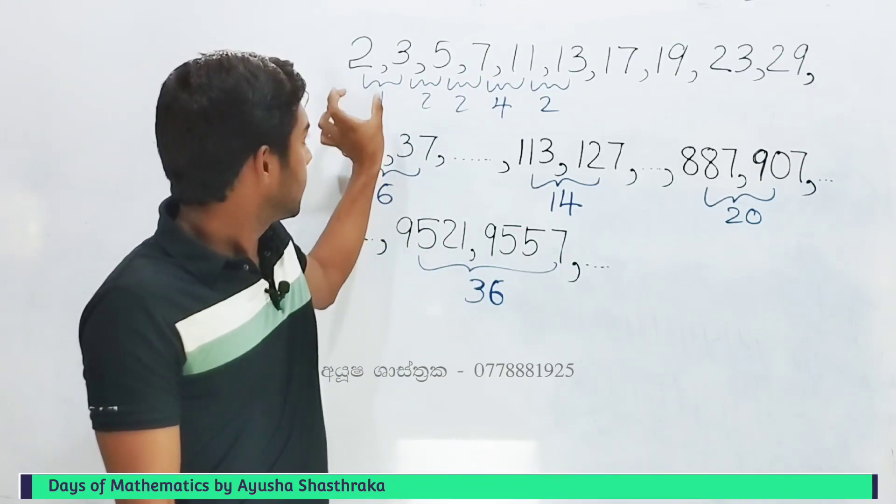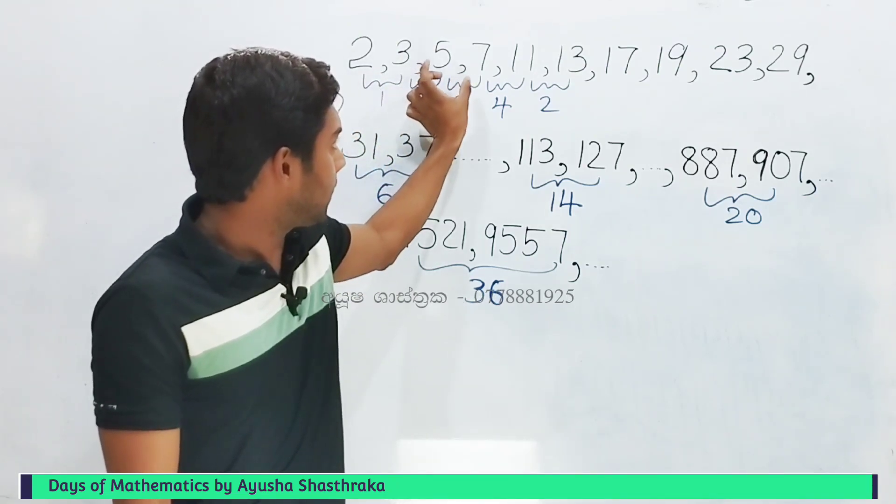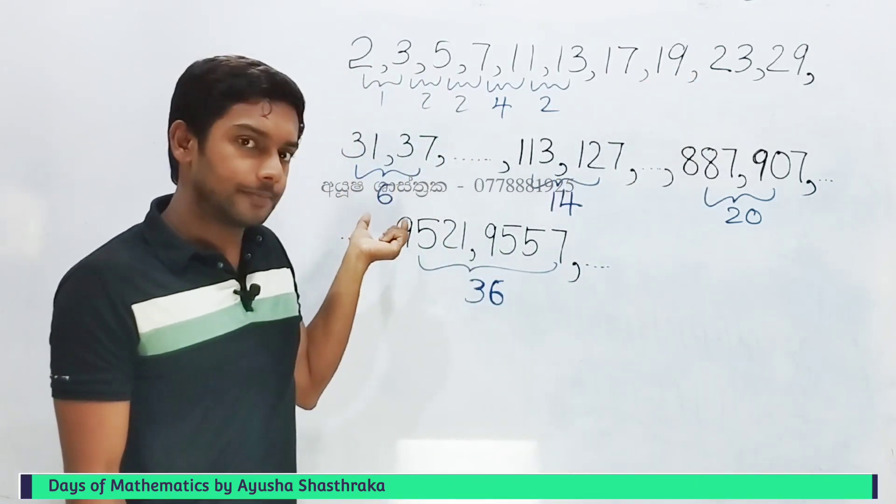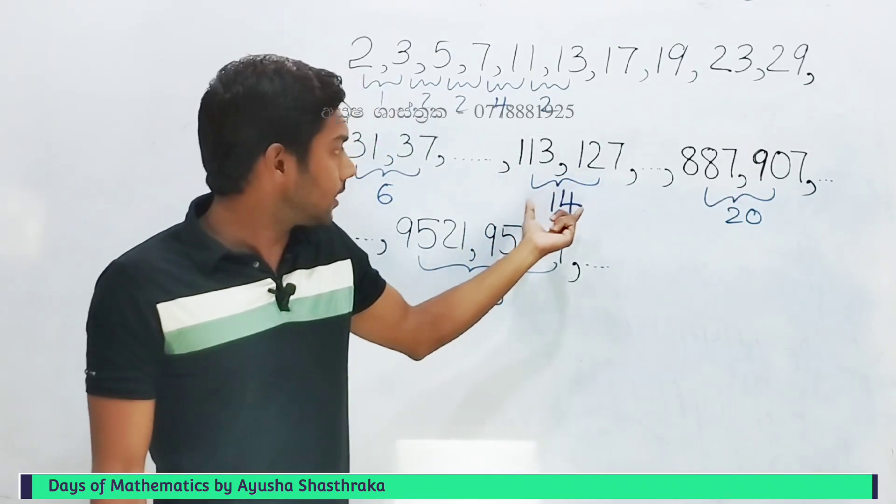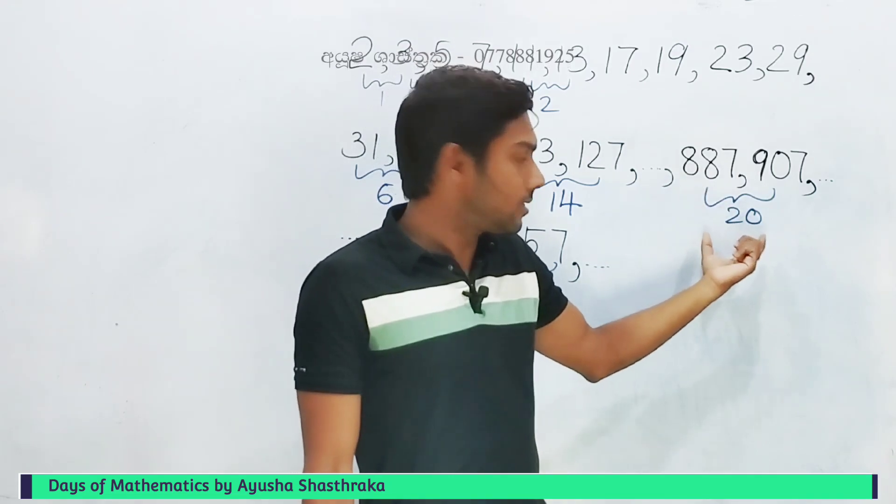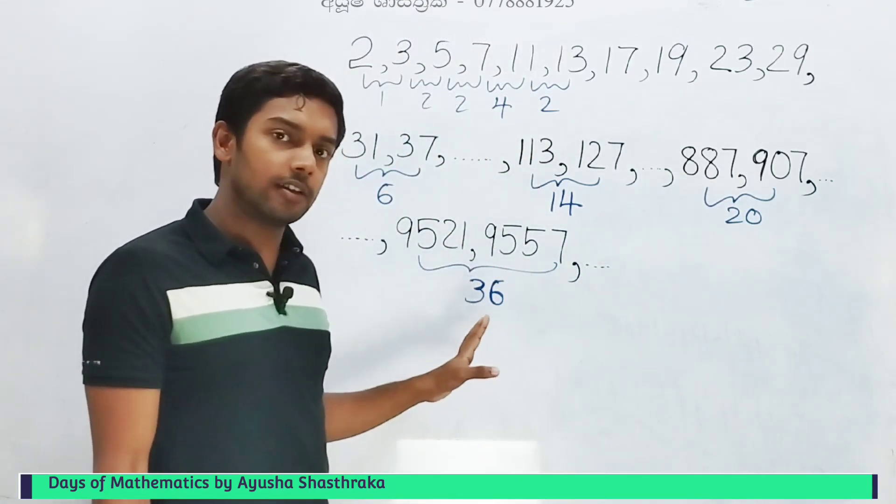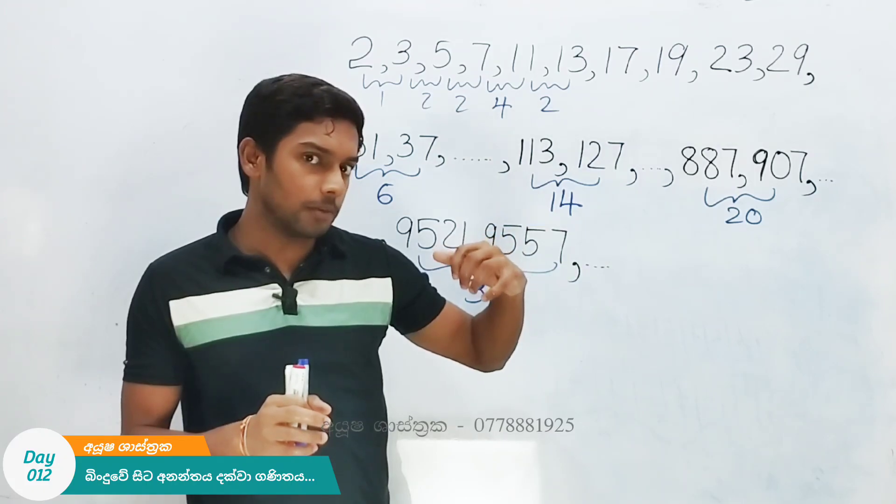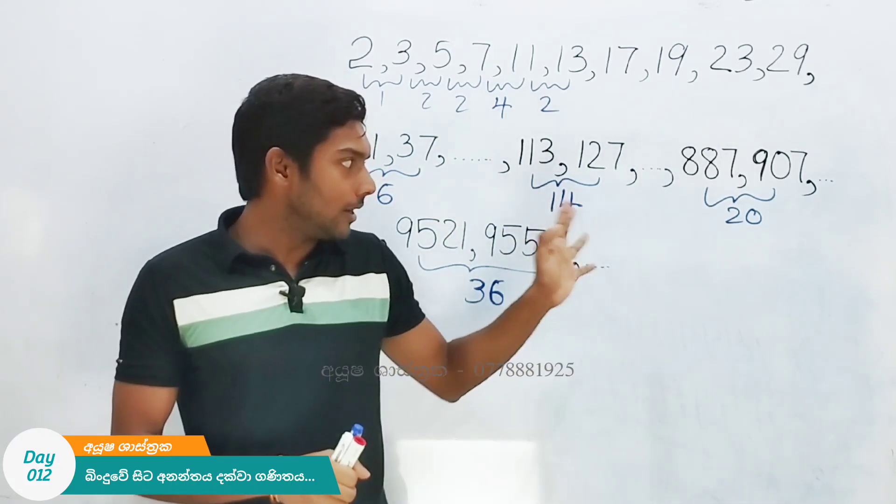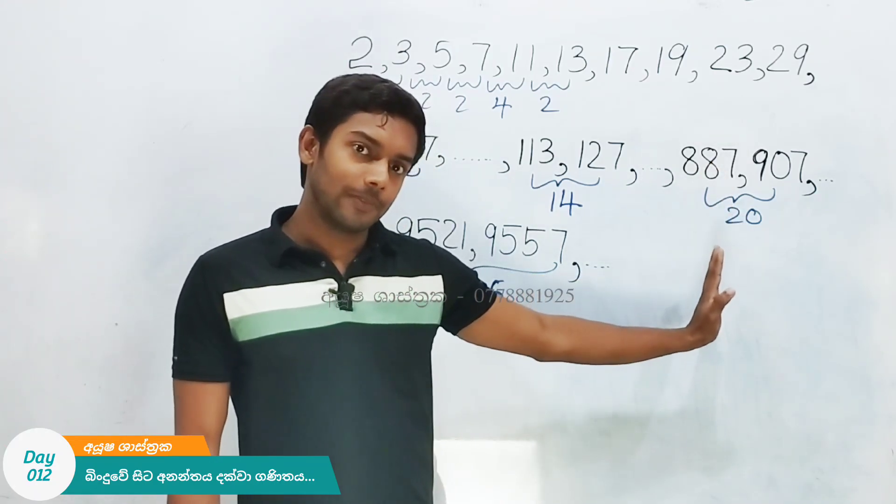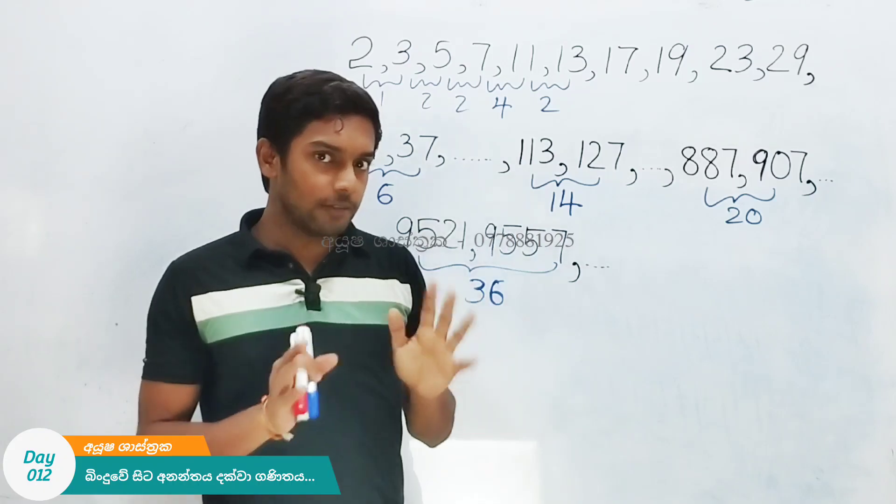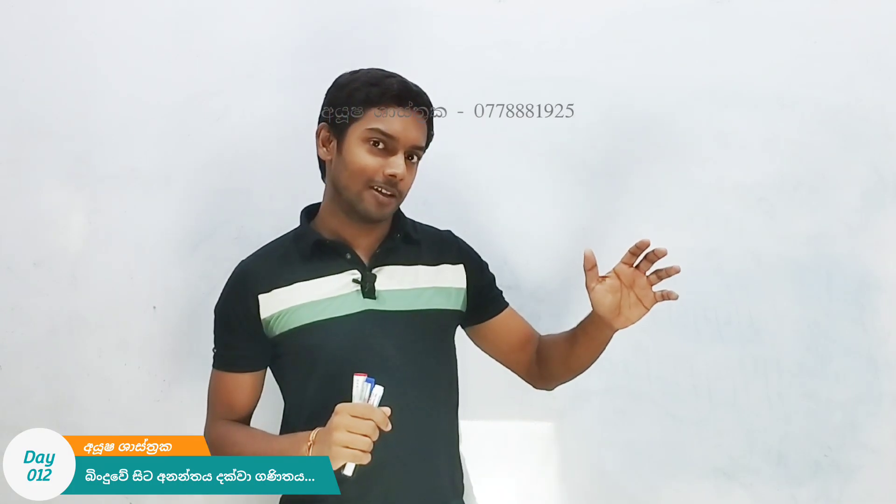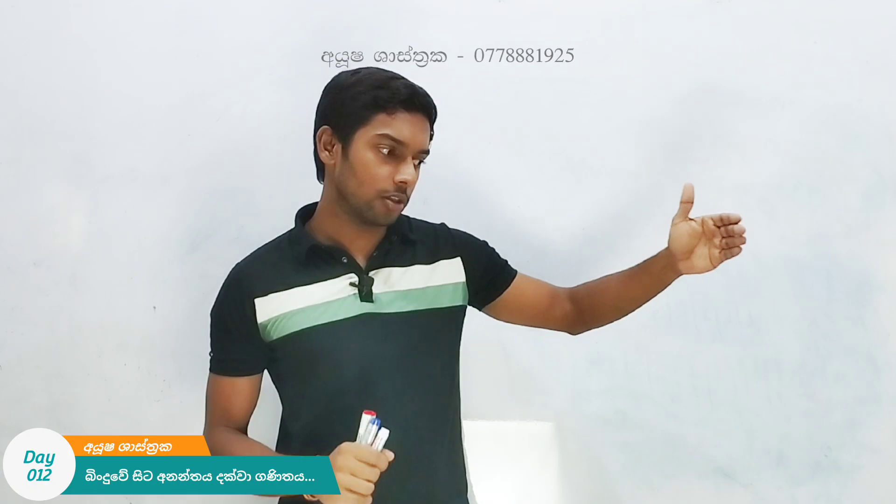Let's start by understanding prime numbers. When we look at primes, we need to consider their properties and how they relate to each other. We'll examine this carefully to build our proof.